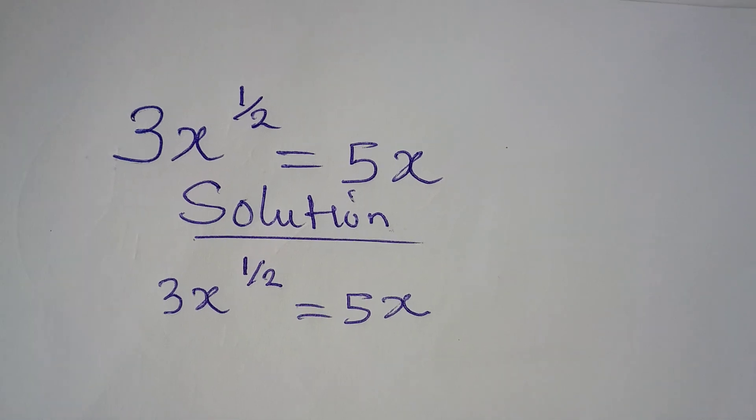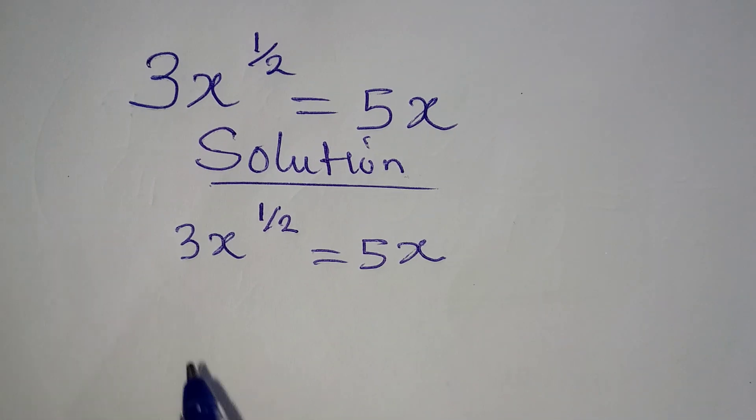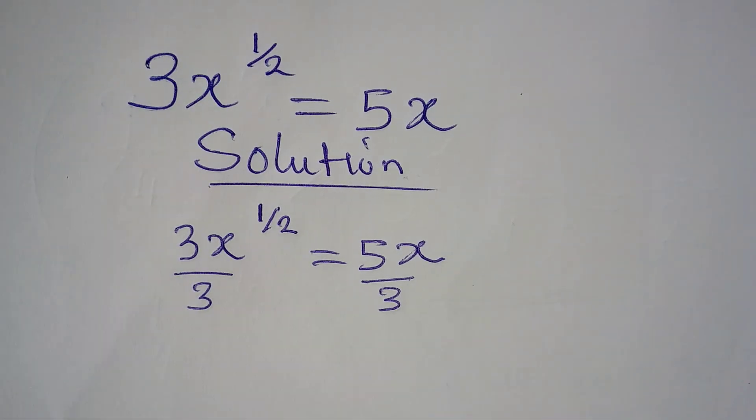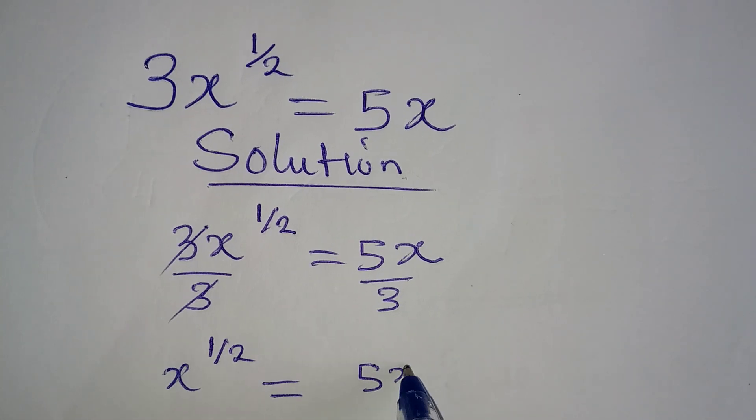The first step I will take is to remove 3 from here by dividing this by 3 and dividing this by 3. This cancels and now x to the power of 1 over 2 is equal to 5x divided by 3.